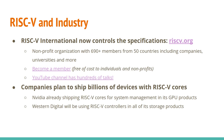RISC-V is seeing increasing adoption in industry. RISC-V International now controls the specifications at RISC-V.org, having taken over from the original group at Berkeley. It's a non-profit organization that keeps growing — last I looked there were 690 members, probably past 700 by now, from 50 different countries, including companies, universities, and nonprofits. As an individual you can join for free, and nonprofits and universities can also join for free. RISC-V International has a YouTube channel with hundreds of talks from the last several years, which is one of the ways I've learned a lot about RISC-V.